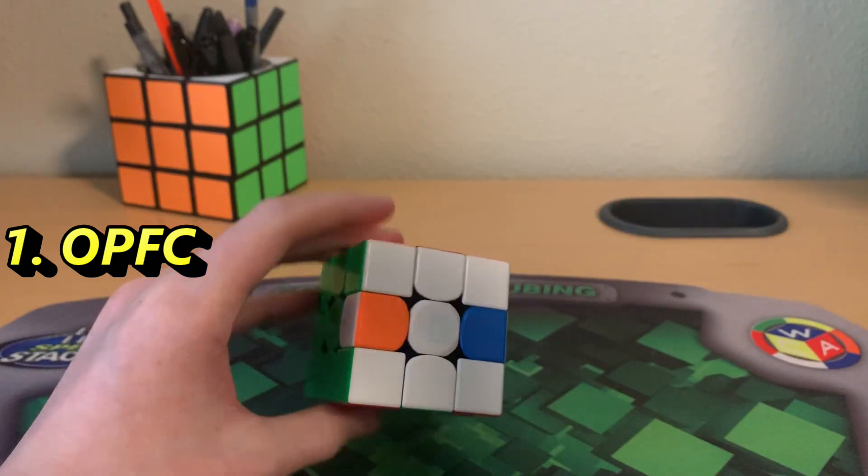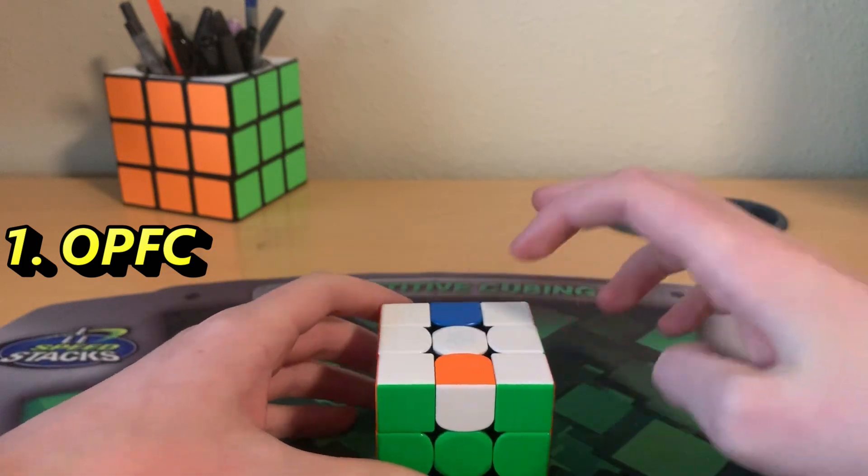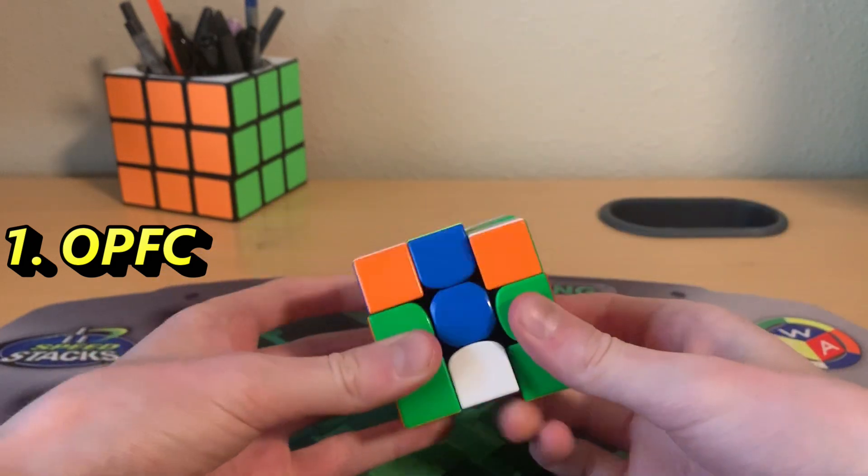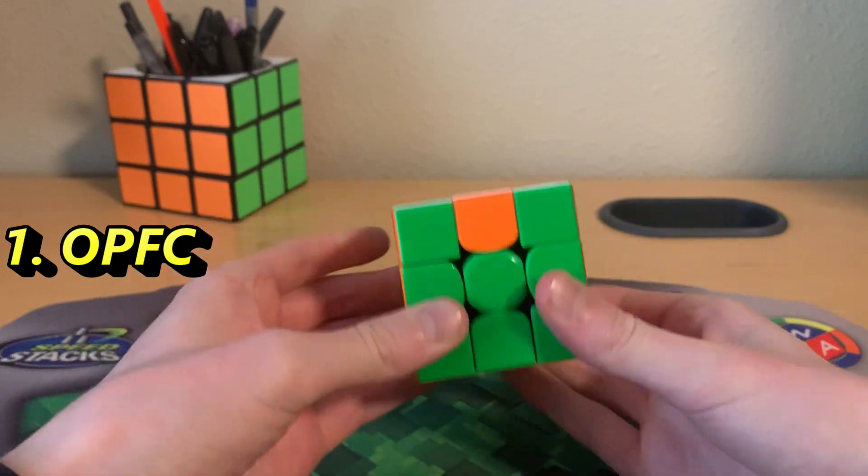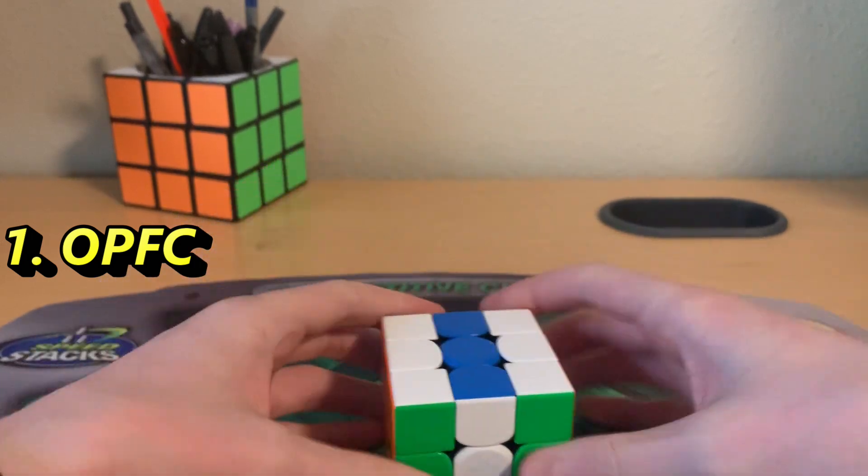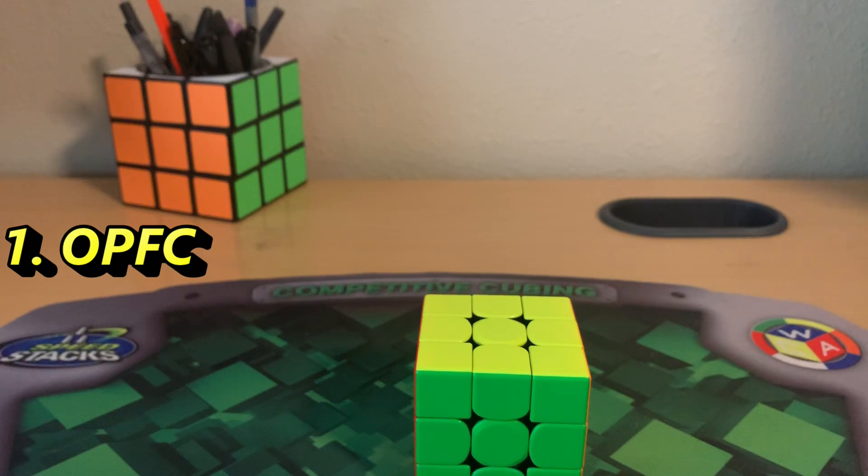So all we have left is to do the cross. I think there's like 20 algorithms if you want to learn one look across. Or you could just learn an algorithm that orients the cross and then permutes the cross. Okay, so that is OPFC method. It's just the reverse of CFOP, but really weird and bad.